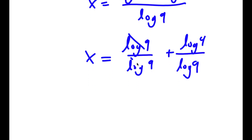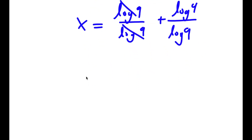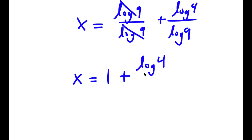So log 9 over log 9, these two cancel out. So I have x is equal to 1 plus log 4 over log 9.